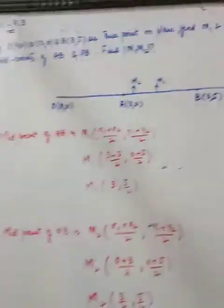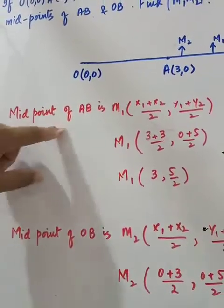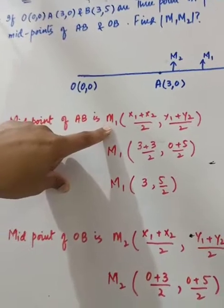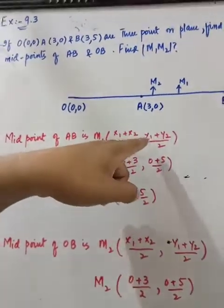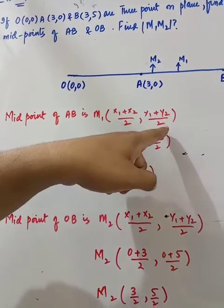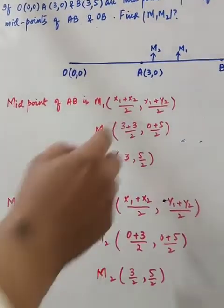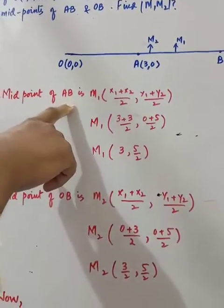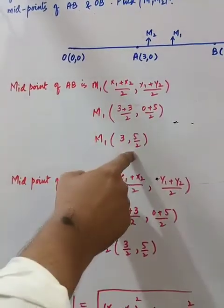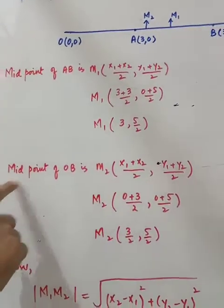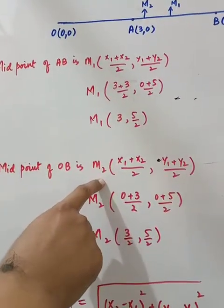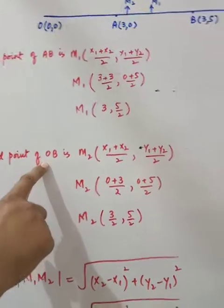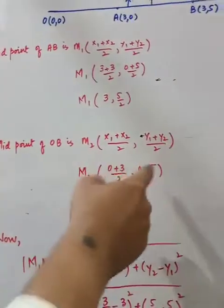Midpoint of AB ka M1 hai. Midpoint formula: x1 plus x2 by 2, y1 plus y2 by 2. A ke points x1 y1, B ke points x2 y2 liye — values put karke M1 ka answer aaya. Phir midpoint of OB ke liye M2: O ke points x1 y1, B ke points x2 y2 — values put ki, M2 ka answer aaya.